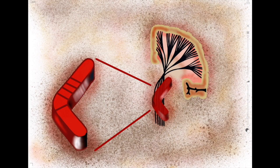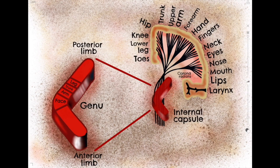We are now going to zoom in on the internal capsule to get a better understanding of its structure and function. It is a white matter tract located between the globus pallidus and putamen on one side and the caudate nucleus and thalamus on the other. The internal capsule has an angular, almost pyramidal shape that lets us divide it into three main parts: the posterior limb, the genu, and the anterior limb. The white matter tracts that project through the internal capsule originate from the cortex, and this fan of fibers is called the corona radiata.